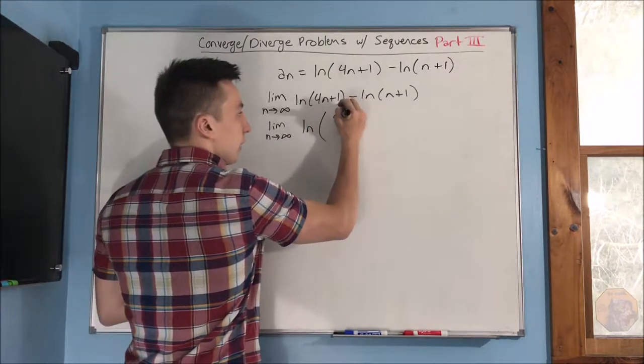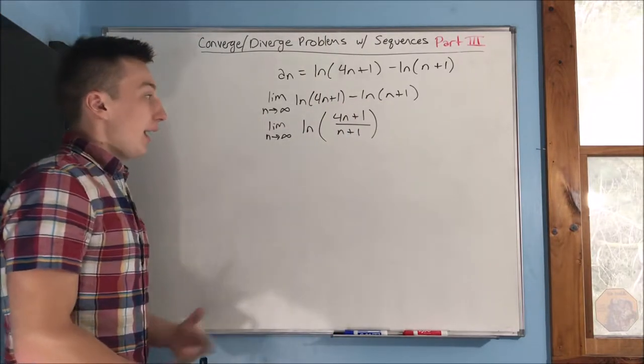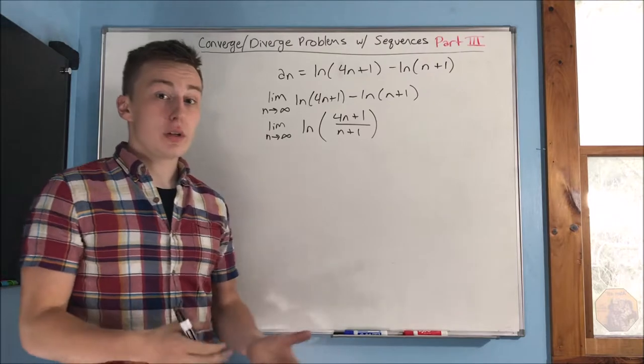And you get 4n plus 1 over n plus 1. And now it becomes a little more clear what you can do.